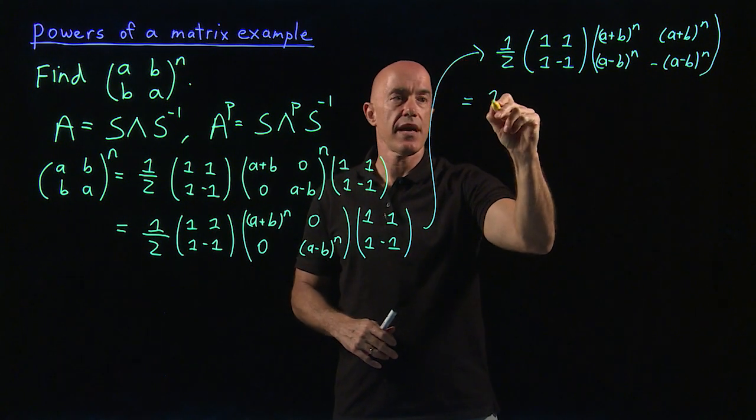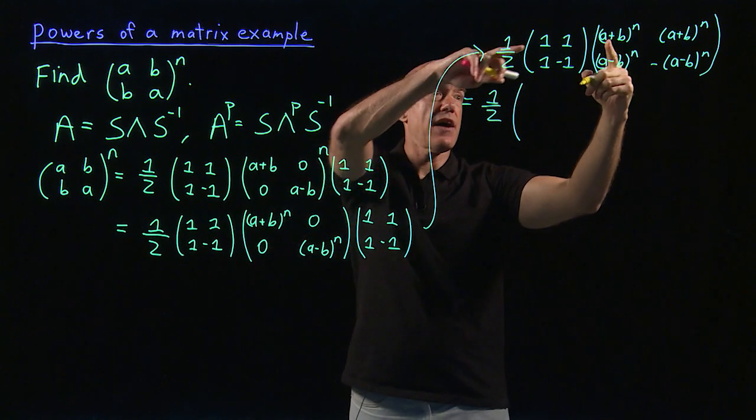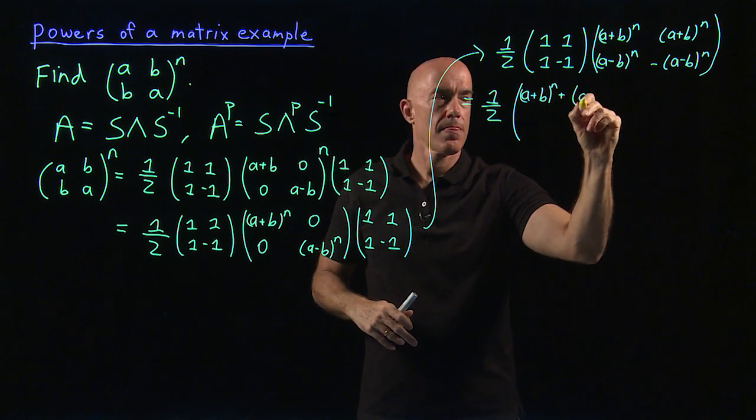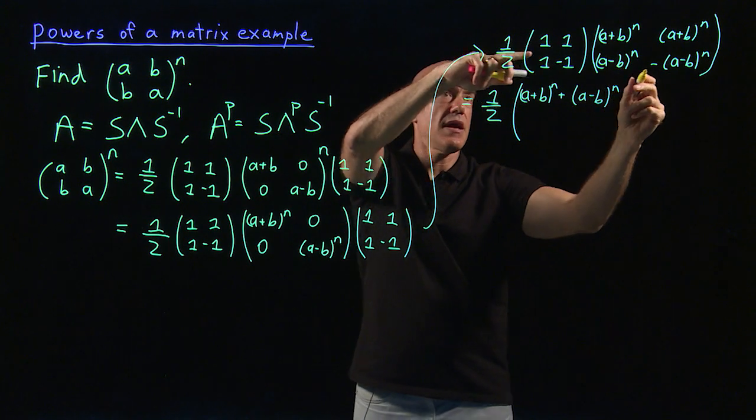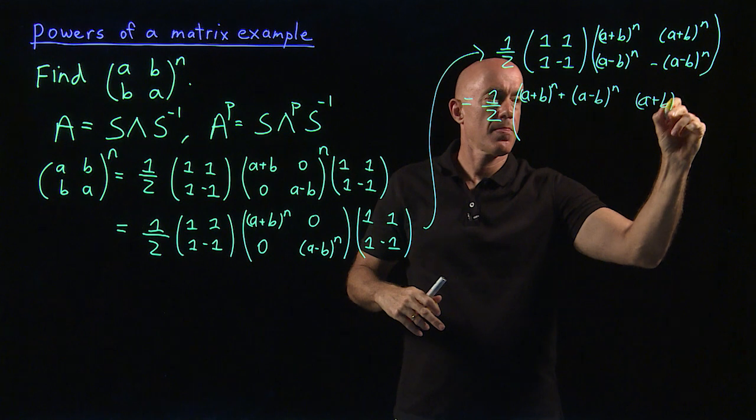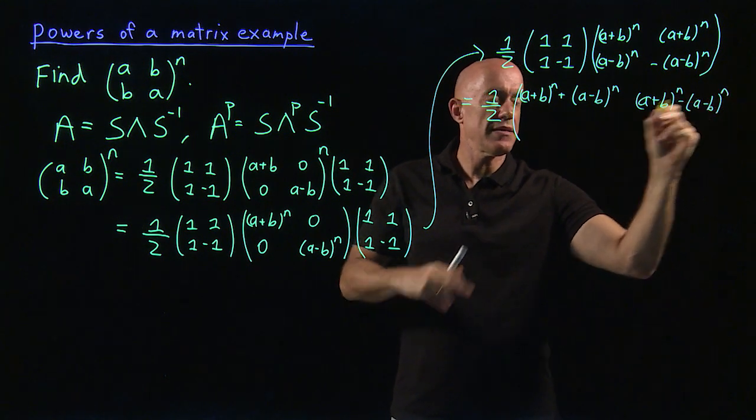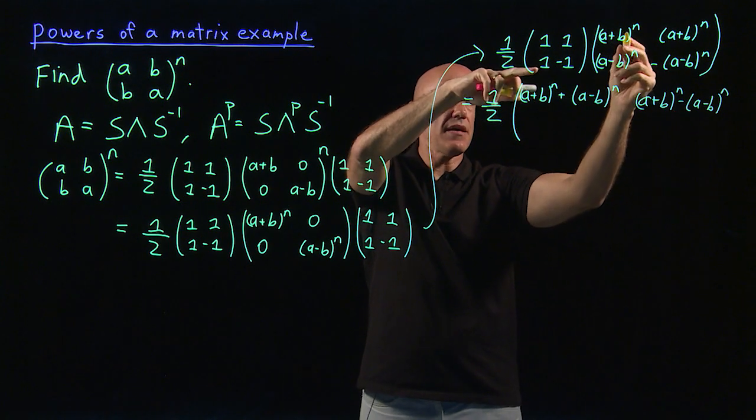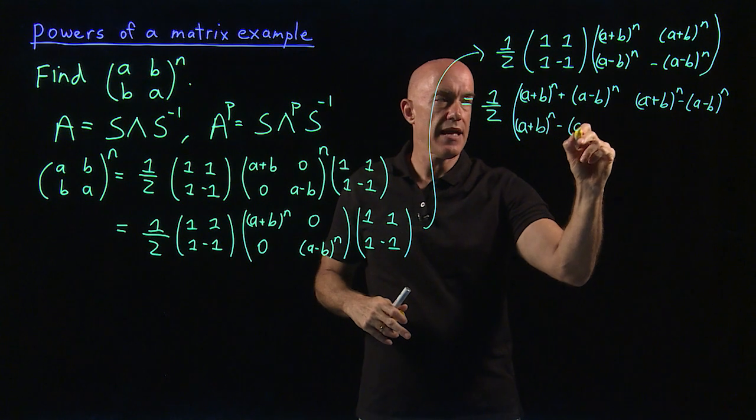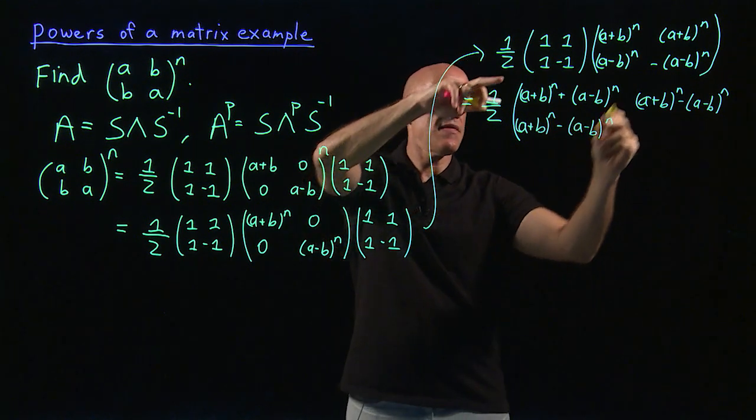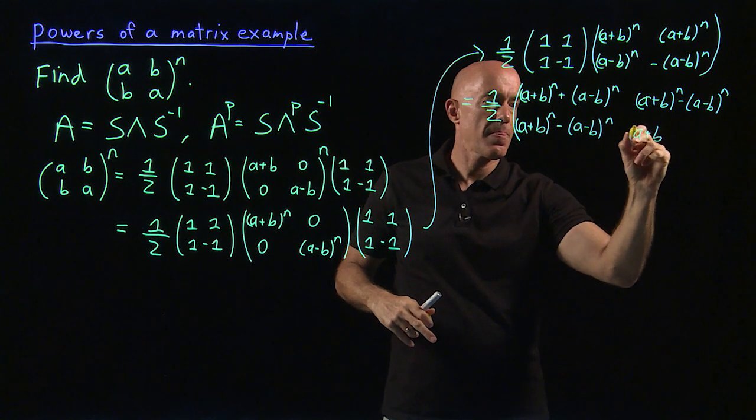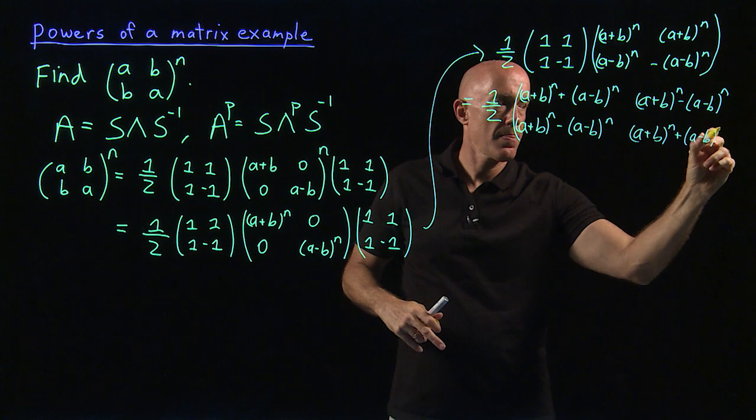One more matrix multiplication, so we have 1 half, and then we have (A plus B) to the nth plus (A minus B) to the nth as the first element. And then we have (A plus B) to the nth minus (A minus B) to the nth as the second, first row, second column, and then the same element here. So this is still symmetric matrix, (A plus B) to the nth minus (A minus B) to the nth. And then the last one is (A plus B) to the nth plus (A minus B) to the nth.